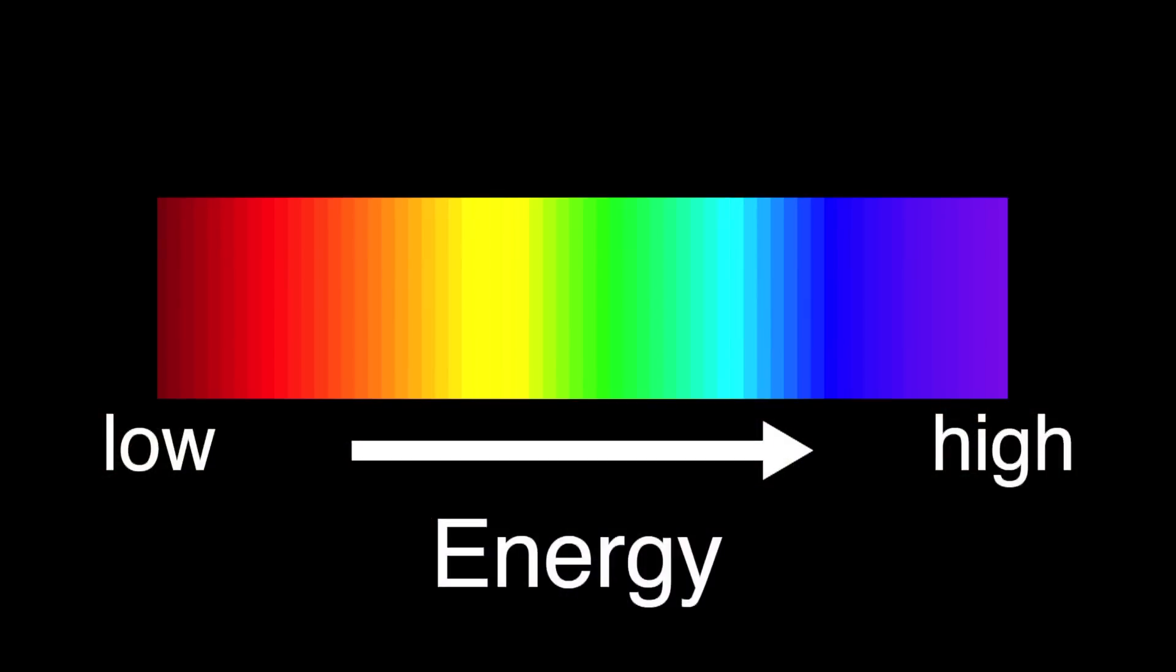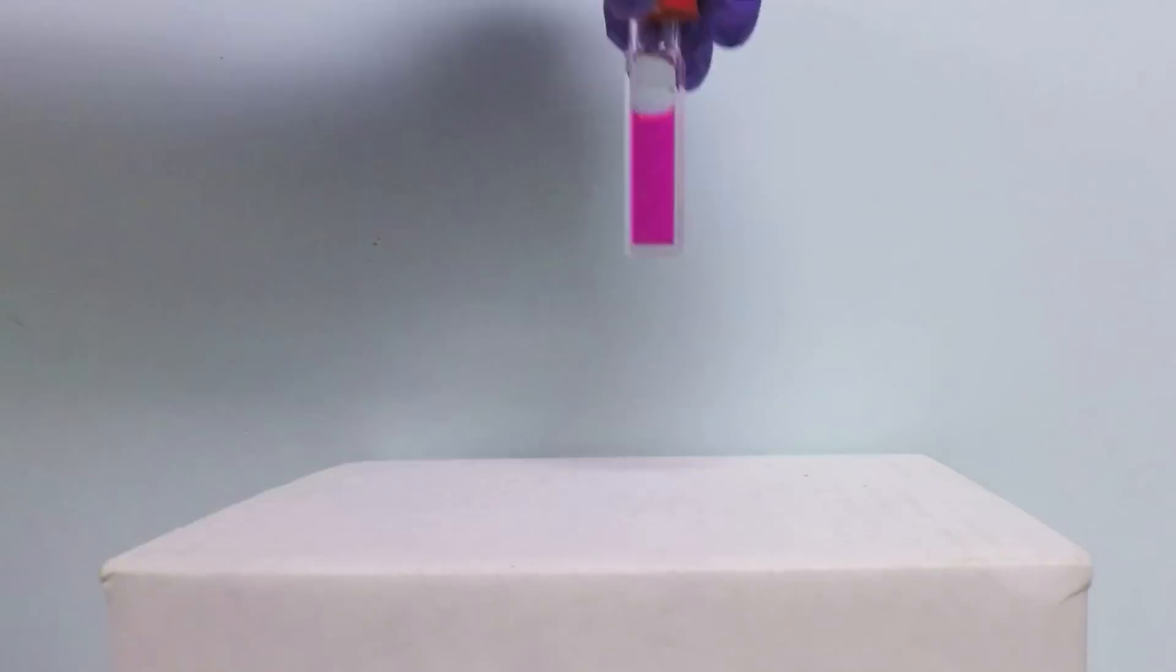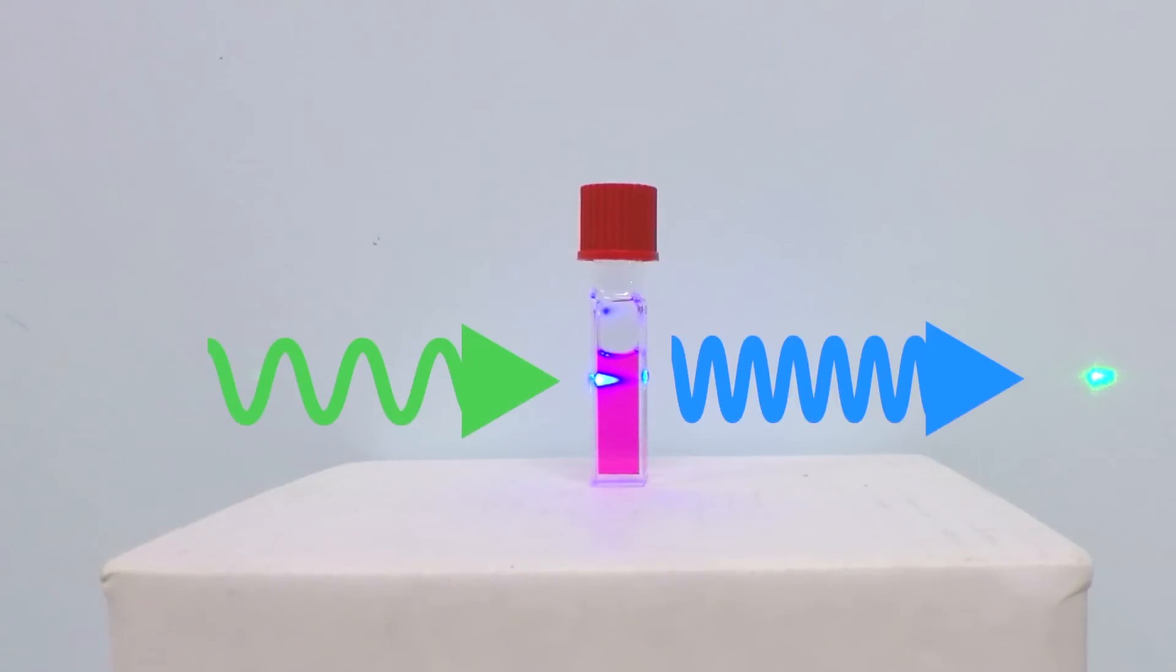Upconversion is a simple idea of converting light up from lower energy to higher energy. Take this green laser light. If we pass it through a solution of upconverting dyes, it gets converted up from green light to blue light.